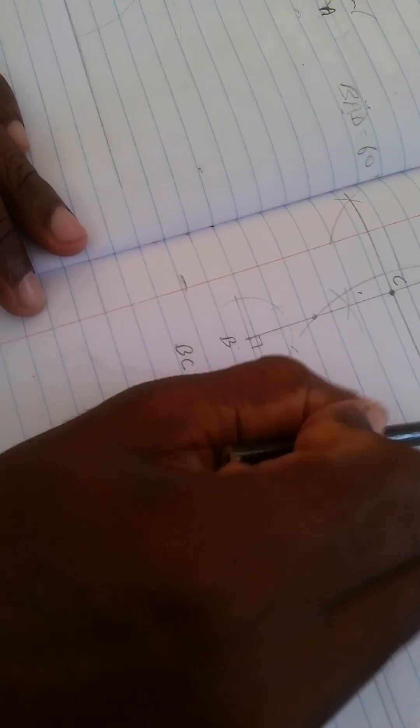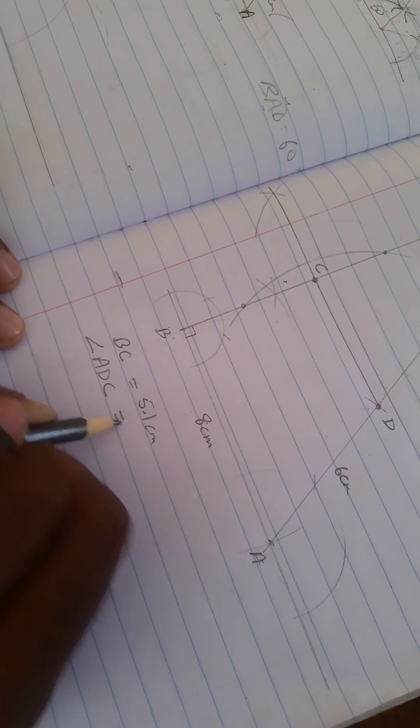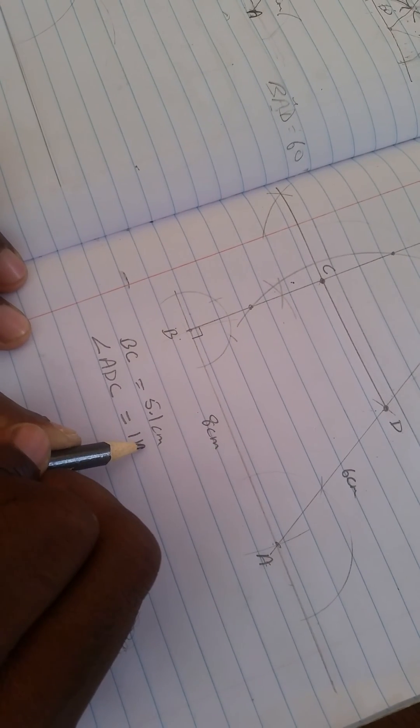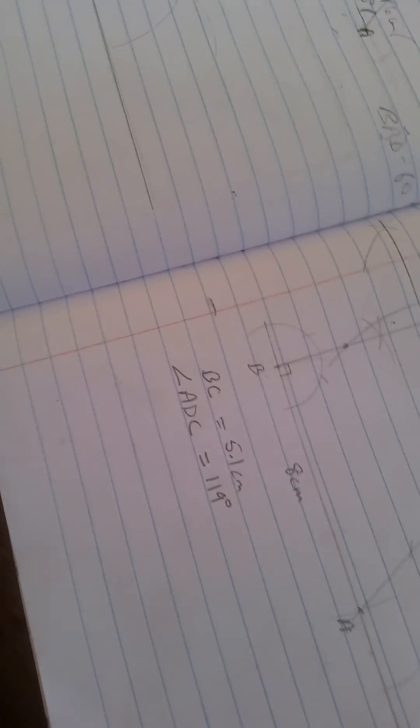So the angle ADC is 119 degrees. Okay. Alright. Thank you.